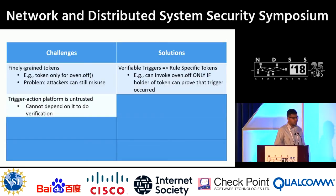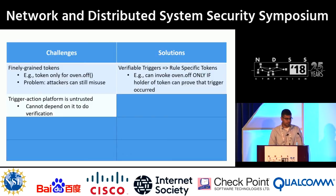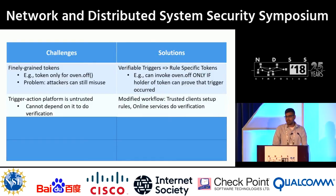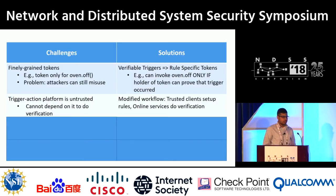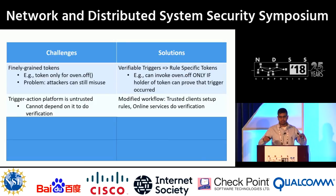The second problem is that we cannot do this verification on the trigger action platform itself, because it is untrusted — we cannot trust it to provide us a proof. Our solution is to modify the workflow of how a trigger action platform works. Specifically, we introduce a trusted client that users use to set up rules, and we place the verification checks at the endpoints on the online services themselves.